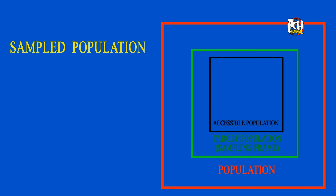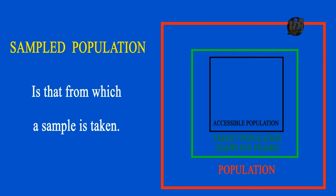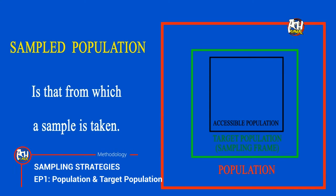Sampled population, in simple words, is that from which a sample is taken — usually from a target population. It is illustrated in a yellow rectangle.